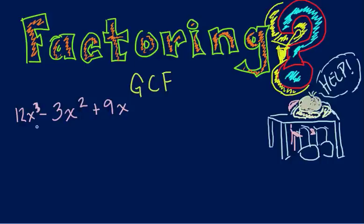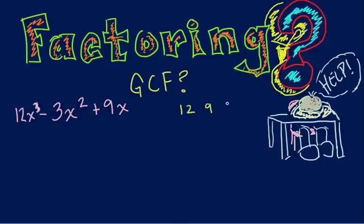So here we have 12x cubed minus 3x squared plus 9x, and it's asking us to factor. The first thing you want to do is see if you have a greatest common factor with the numbers. Greatest common factor means we take a number — what's the biggest number that can go into all three of these numbers? So we have 12, 9, and 3.